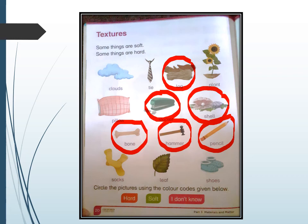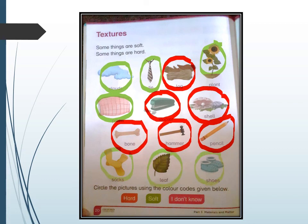Now I have to choose green color to circle the soft objects like cloud, tie, plant, pillow, socks, leaf, and shoes. This is your homework page. You have to do this workbook page in your books, and that is page number 20.